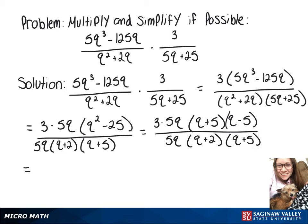To cancel some things out, we can rewrite this as 5q over 5q times q plus 5 over q plus 5 times 3 times q minus 5 over q plus 2. Since these parts are equal to 1, they'll cancel out.